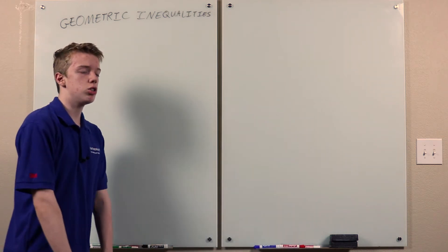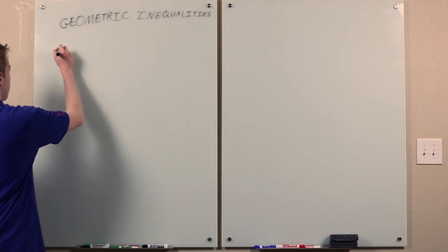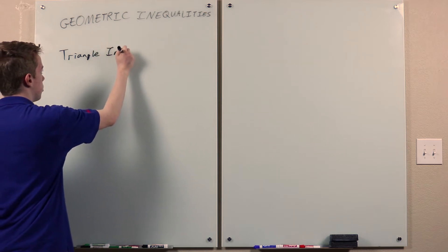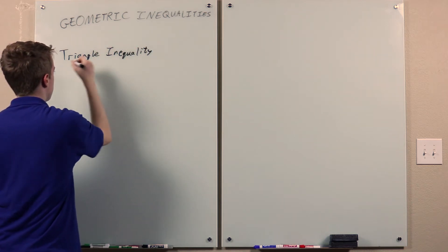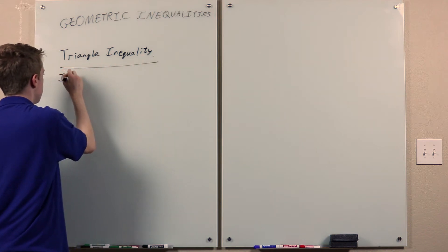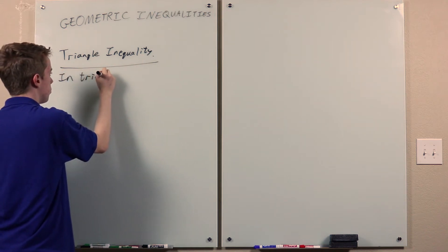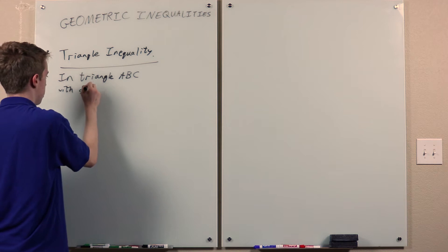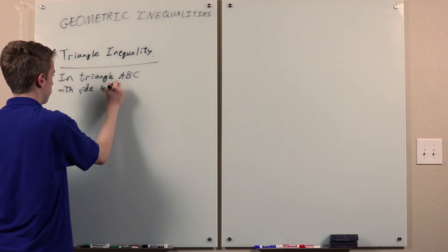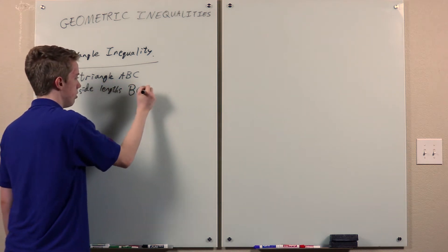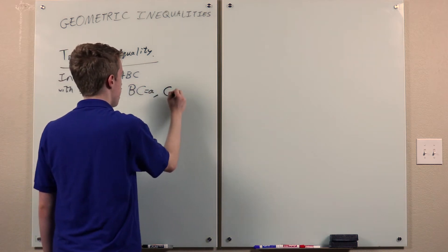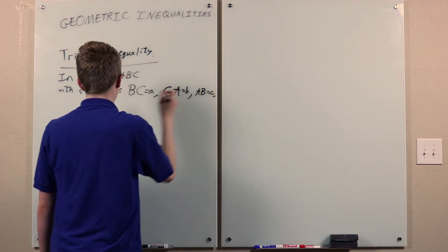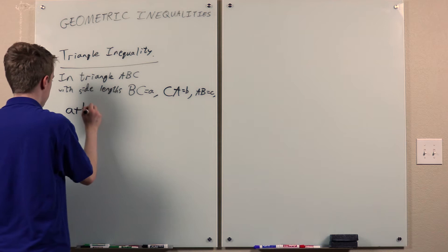The most fundamental geometric inequality is the triangle inequality, which is in a triangle ABC with side lengths BC is lowercase a, CA is lowercase b, AB is lowercase c, then a + b is greater than c.